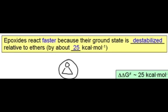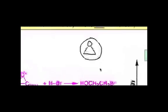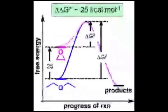Relief of this strain energy, for instance by an SN2-type process, will tend to be thermodynamically favored. And in fact, we can observe this thermodynamic advantage in the reactions of epoxides versus reactions of ethers.